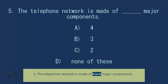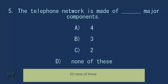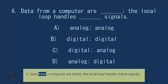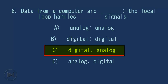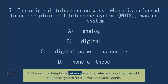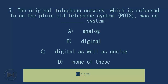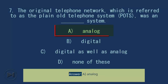Question 5: The telephone network is made of blank major components. Question 7: The original telephone network, which is referred to as the Plain Old Telephone System (POTS), was a blank system. A. Analog. B. Digital. C. Digital as well as analog. D. None of these. Answer: A. Analog.